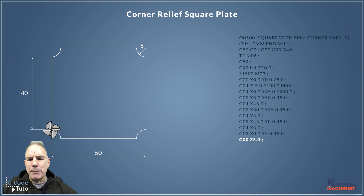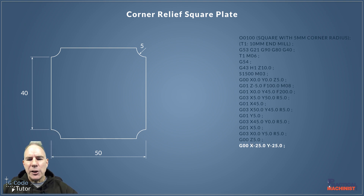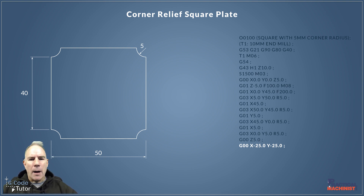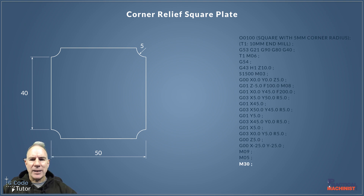Rapid move G00 — we lift the tool 5mm above the surface of the material. We're assuming the surface is at Z0, so this gives us 5mm clearance. Then G00 again to rapid it back to a safe position away from the part. M09 turns off the coolant, M05 turns off the spindle, and M30 designates the end of the program.